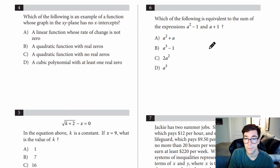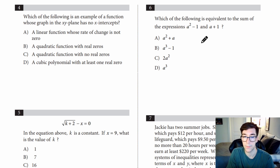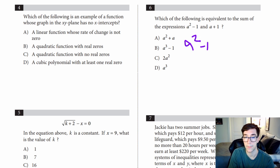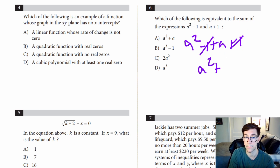Number six: which of the following is equivalent to the sum of the expressions A squared minus one and A plus one? We're just adding these together: A squared minus one plus A plus one. The negative one and plus one cancel, so we get A squared plus A. The answer is A.